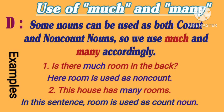Some nouns can be used as both count and non-count nouns, so we use much and many accordingly. Examples: 1. Is there much room in the back? Here, room is used as non-count, so we use much. 2. This house has many rooms. In this sentence, room is used as a count noun, so many is used.